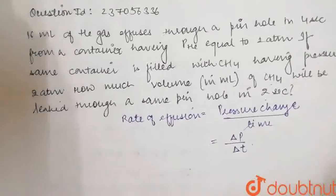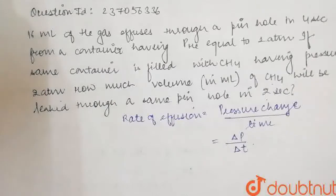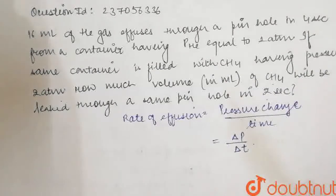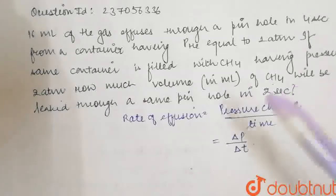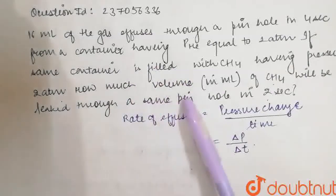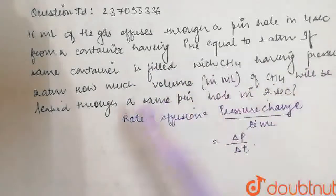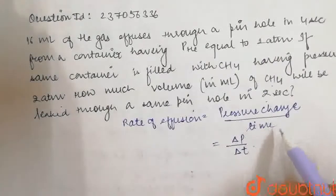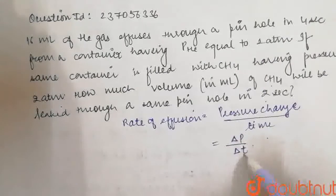So, the question is that 16 ml gas effuses through a pinhole in 4 seconds from a container. The pressure is helium, 1 atmosphere. When the same container is filled with CH4, the pressure is 2 atmosphere. How much volume of CH4 will be leaked? We need to calculate the rate of effusion. Pressure change upon time, delta P by delta T.